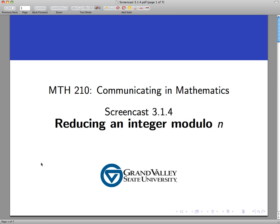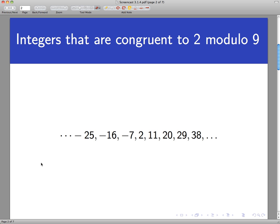So what is this concept of reducing an integer modulo n? I wanted to go back to the last screencast in the concept check you saw where we were looking for integers that were congruent to 2 modulo 9.